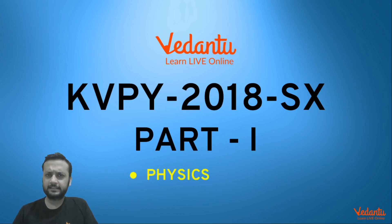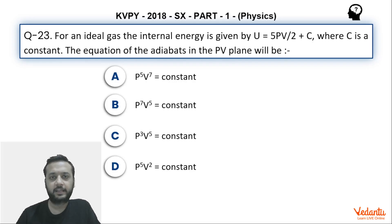Hi dear students, let's see this question that was asked in KVPY 2018 SX Part 1 Physics paper. The question is fairly simple. We have been given the relation between the internal energy, pressure, and volume of a gas, and we have to find the equation of the adiabats.